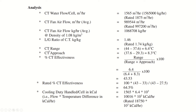The cooling tower range is the difference between the hot and cold water temperatures: 44°C at the inlet minus 37.6°C at the exit gives a range of 6.4°C. The cooling tower approach is the difference between the cold water outlet temperature and the ambient wet bulb temperature, giving an approach of 8.3°C.